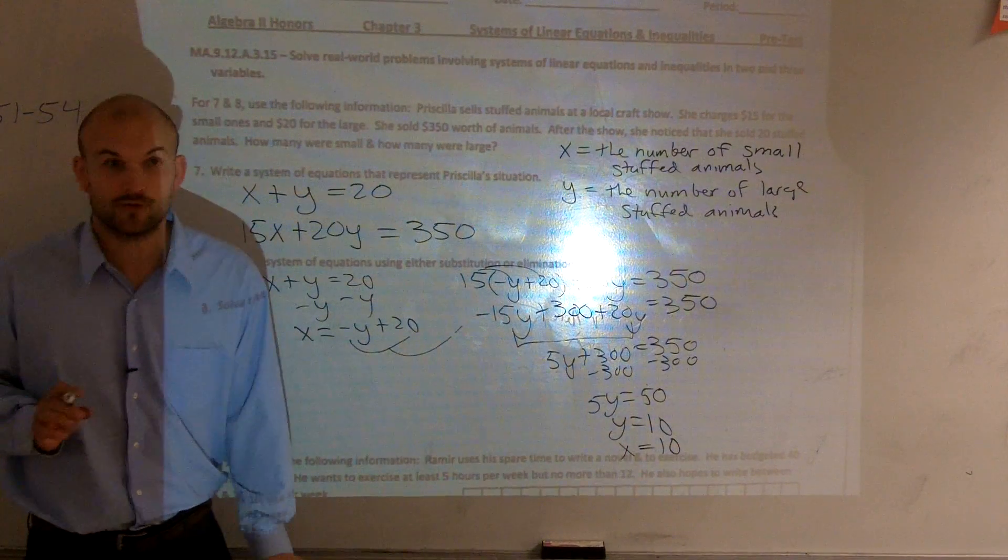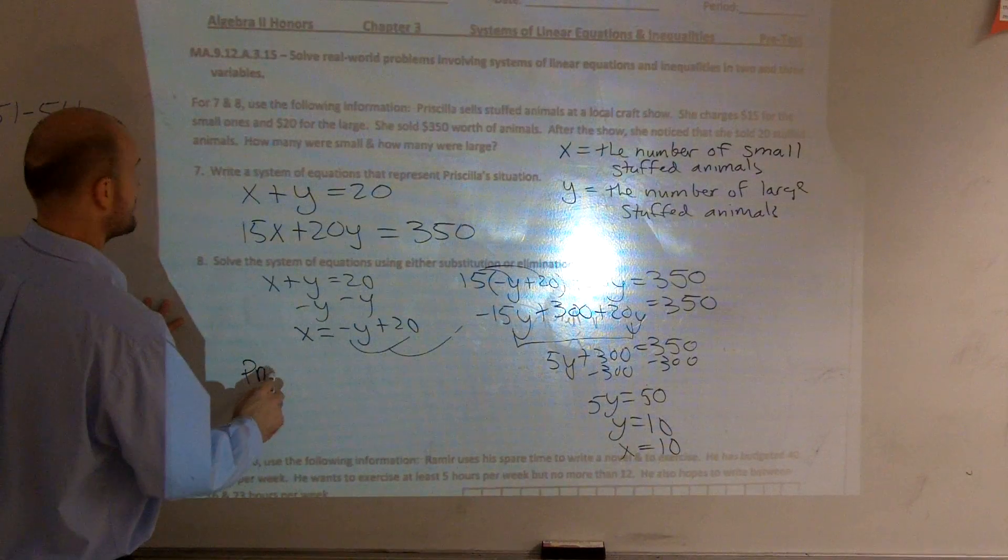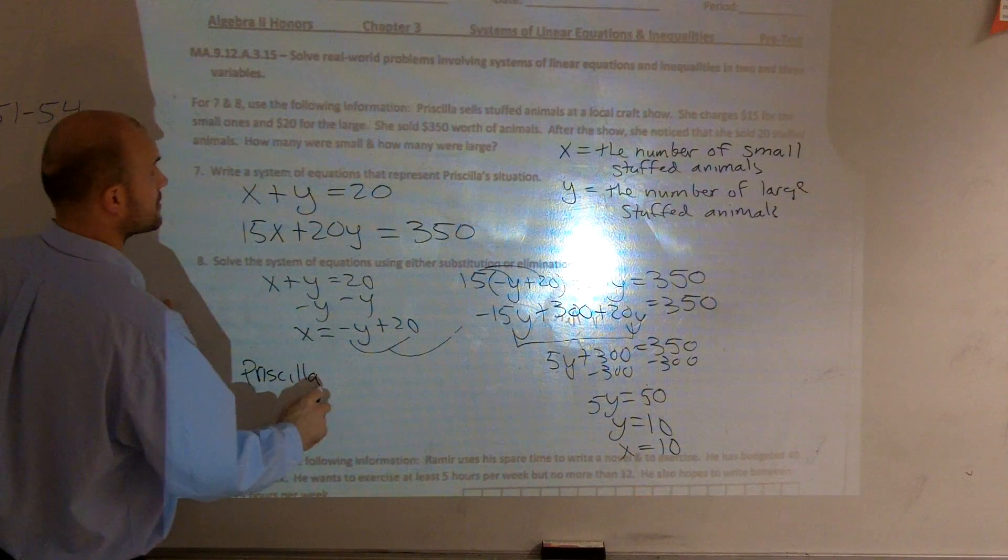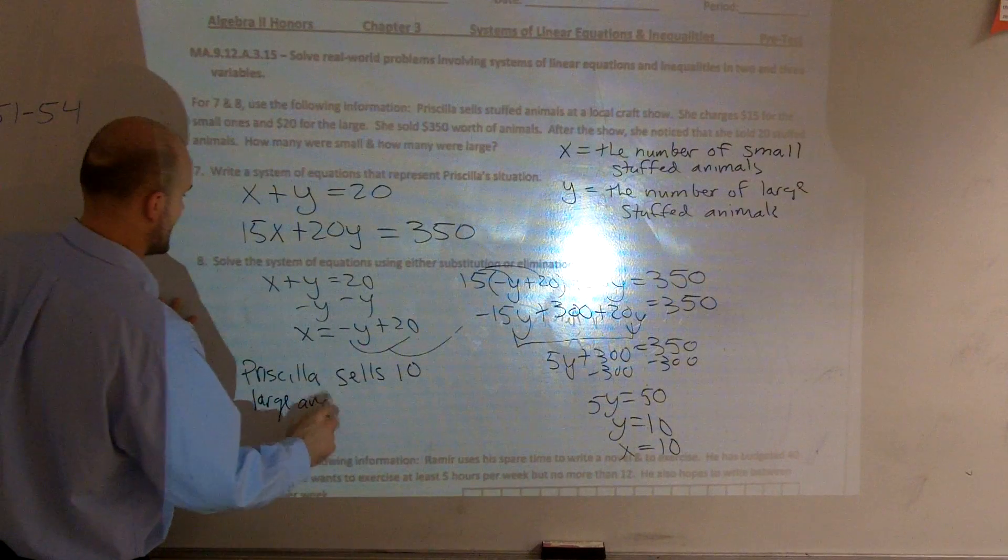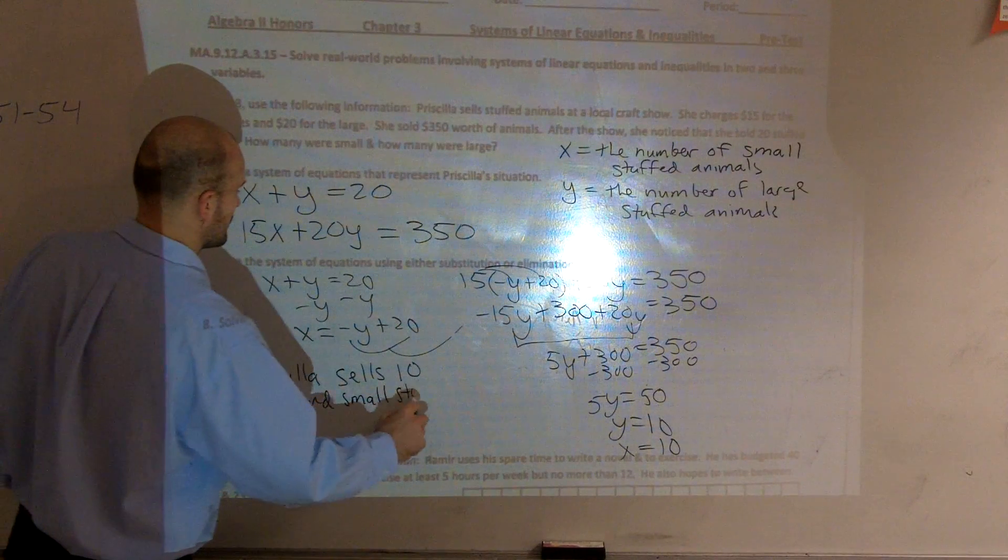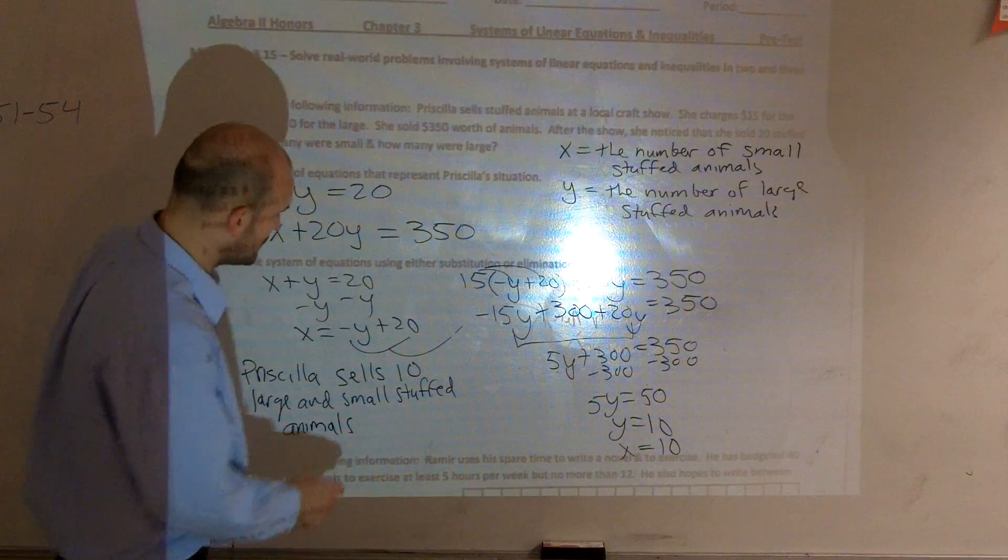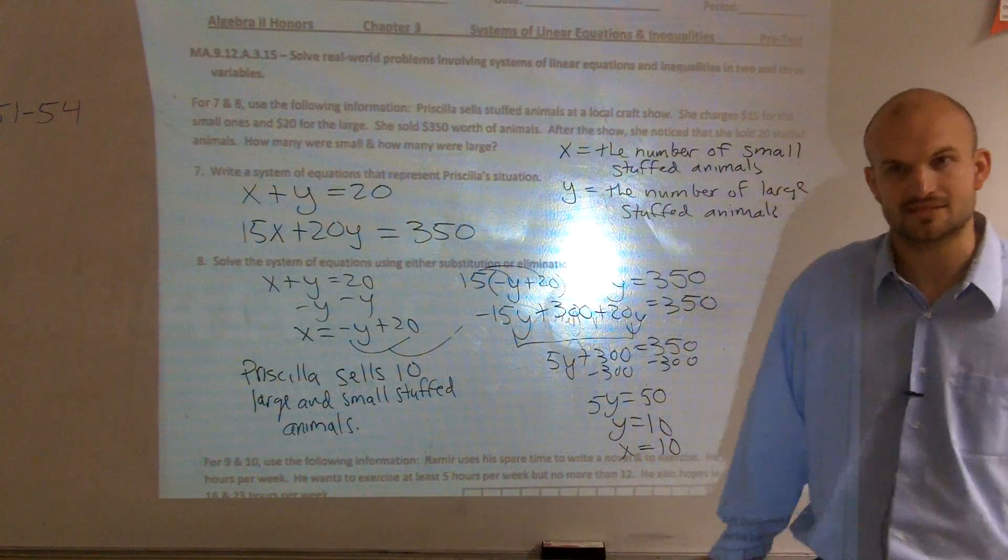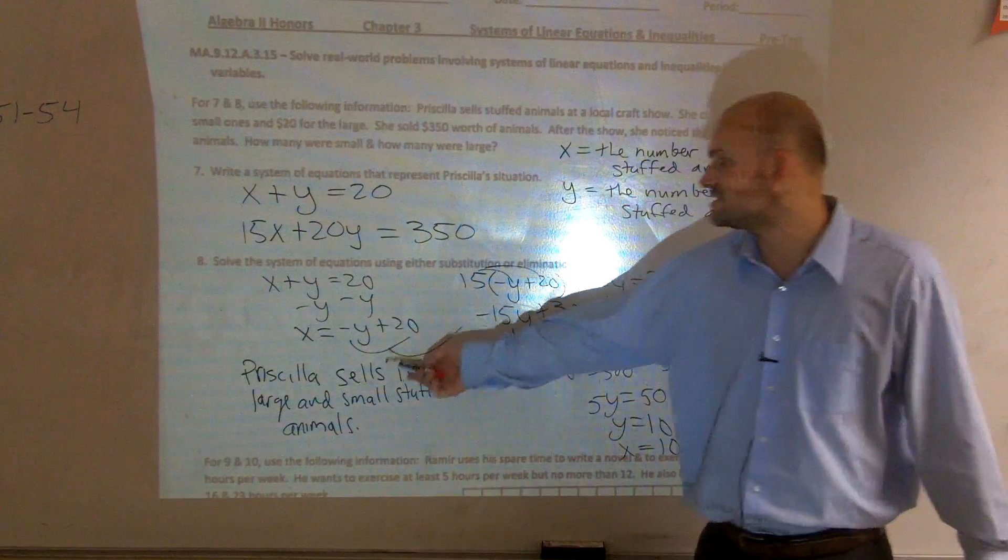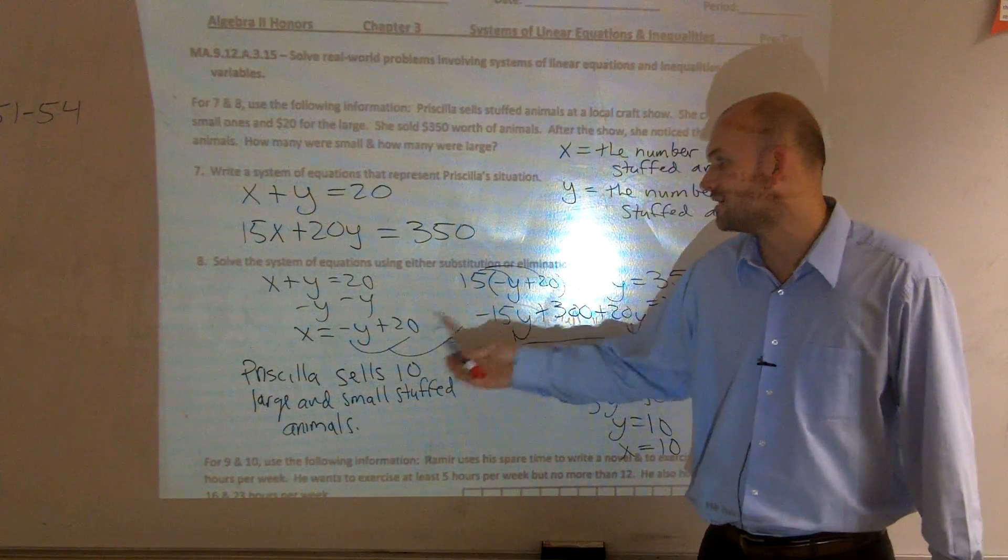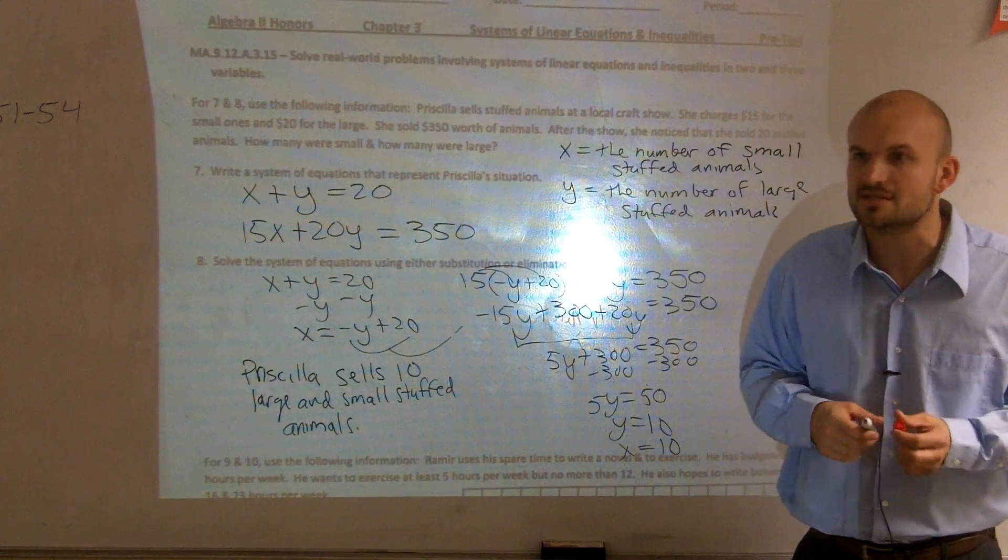So, the last step that I want you to do for your word problem, because a word problem, it's a lot of steps, it's a lot of work to be able to read through this. What you want to say is Priscilla sells 10 large and 10 small stuffed animals. And the reason why we put it back into a word problem is does that make sense in the context of the problem? Our answer, y and x don't make sense. But when you say, she sells 10 large and small stuffed animals, does that make sense? Well, in the context of your equations, then yes, that's going to make sense.